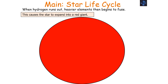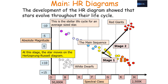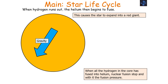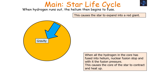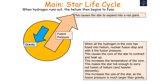When the hydrogen eventually runs out, the heavier elements begin to fuse and this causes the star to expand into a red giant — our fourth stage in stellar evolution. On the Hertzsprung-Russell diagram it moves from the central area to the top right-hand corner. In red giants, fusion of elements larger than hydrogen takes place. When all the hydrogen in the core has fused into helium, nuclear fusion stops, the fusion pressure decreases, and the core contracts and heats up. This increased temperature makes the star hot enough to carry out fusion of helium and heavier elements, increasing the size of the star.